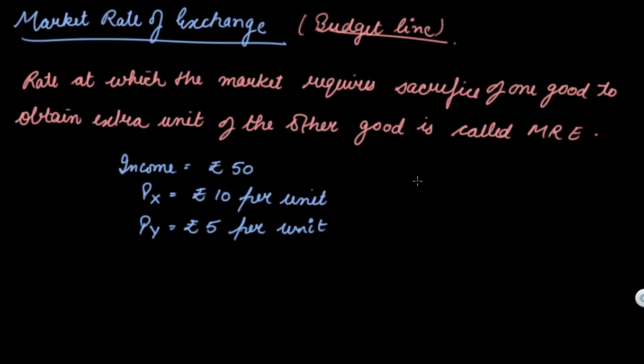So if you have to buy one additional unit of X, what does the market demand? The market demands that you sacrifice two units of Y.